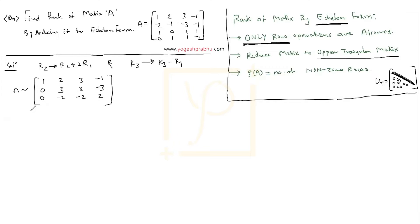And then the row 4 is as it is. So it is 0, 1, 1 and minus 1. I will keep the row 4 as it is.